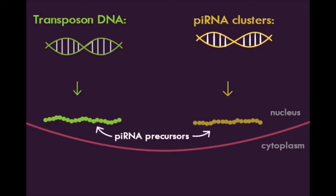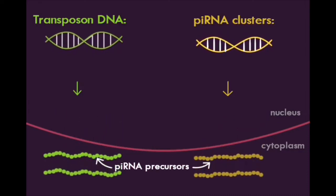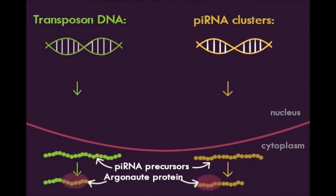These form PI-RNA precursor transcripts, which will be translocated out of the nucleus and undergo primary processing, which includes shortening of the PI-RNA strand and binding onto Argonaute proteins.